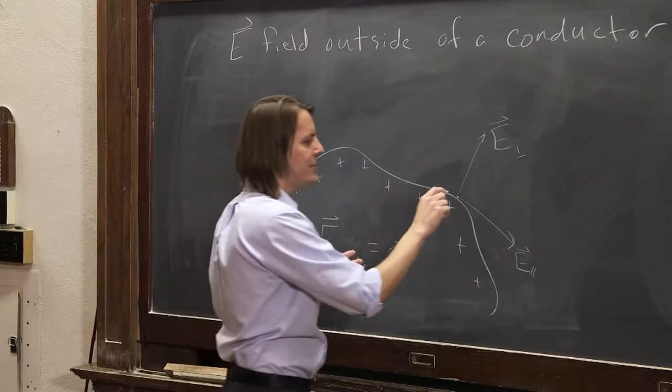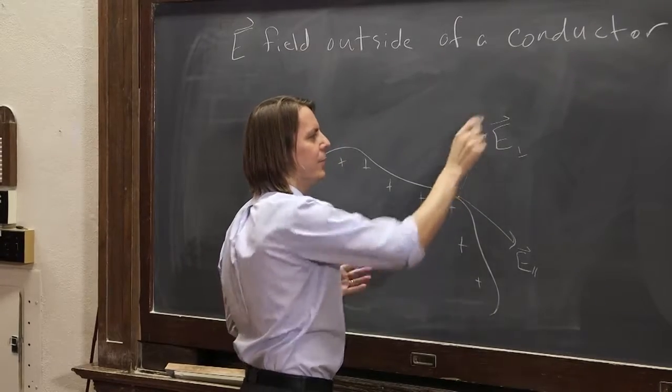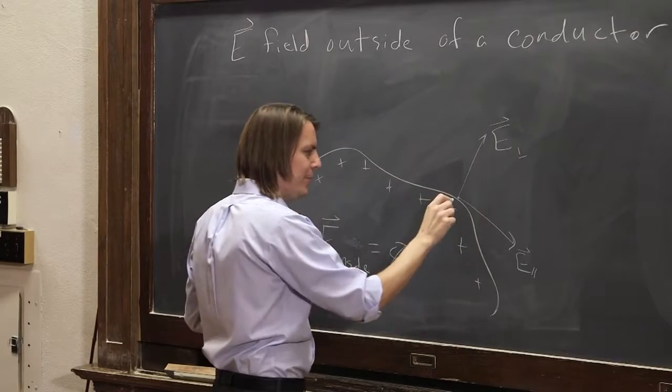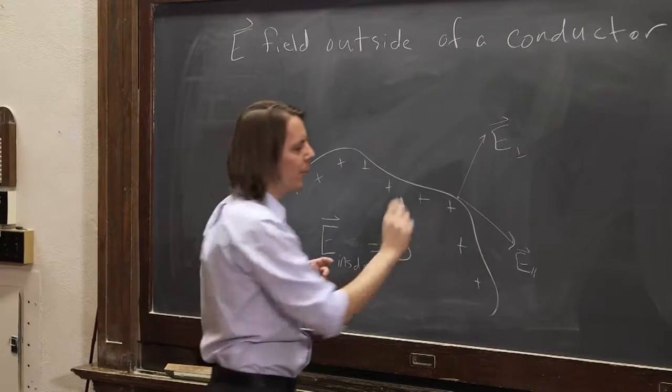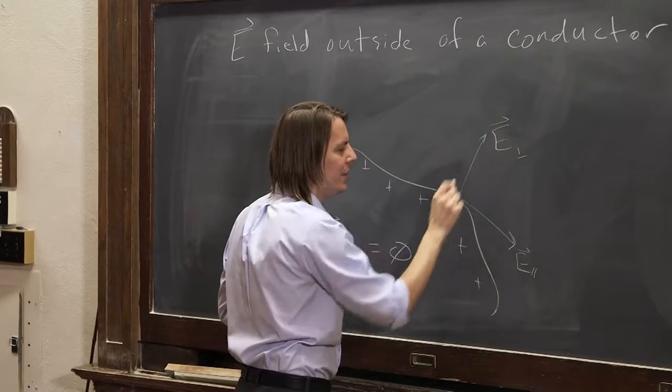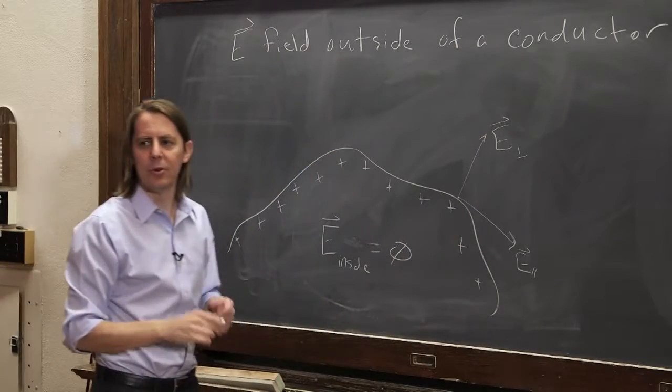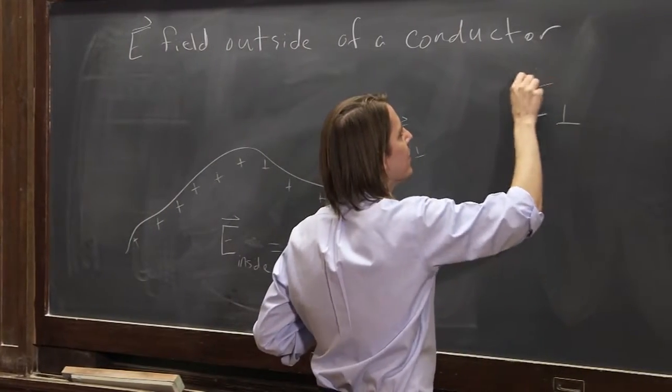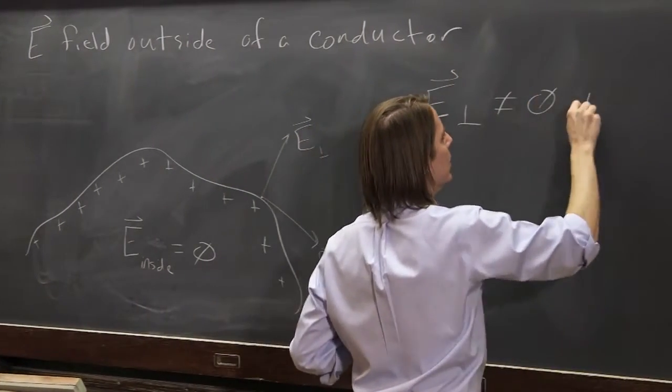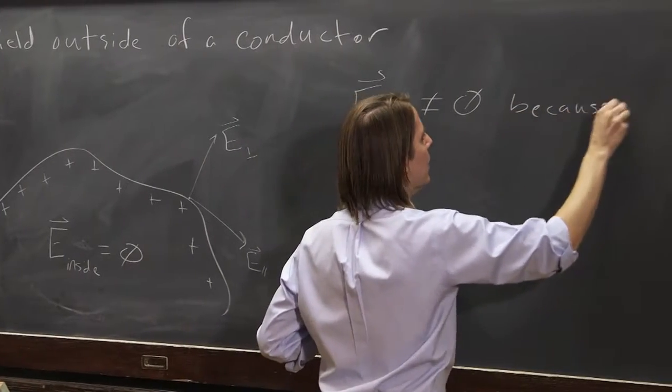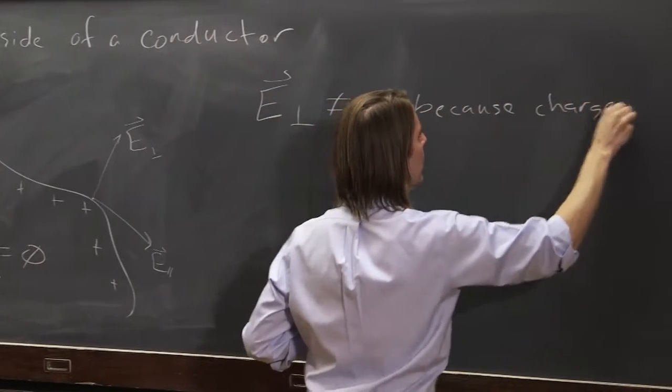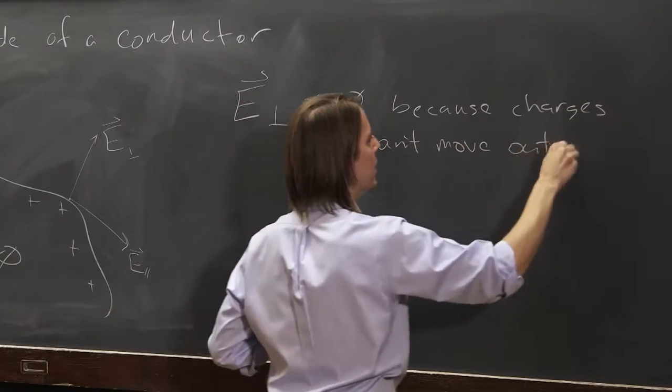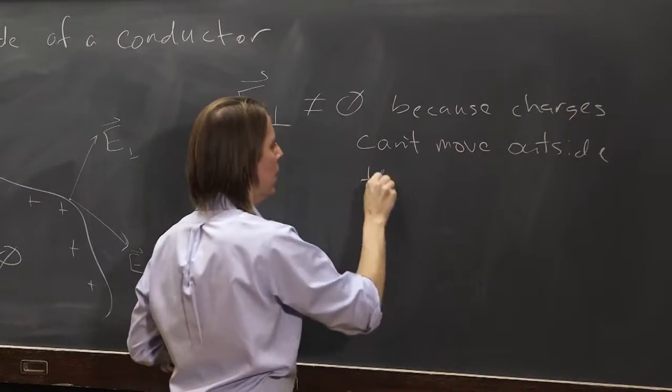So the E field just outside actually can exist in this direction, perpendicular, because you would say, well, whenever there's an E field, inside it goes away because the charges can move in a way that will cancel it. Well, this is the one way they can't move. They can't move out of the material. They're stuck in the material. So E perpendicular does not equal zero because the charges can't move outside the conductor.